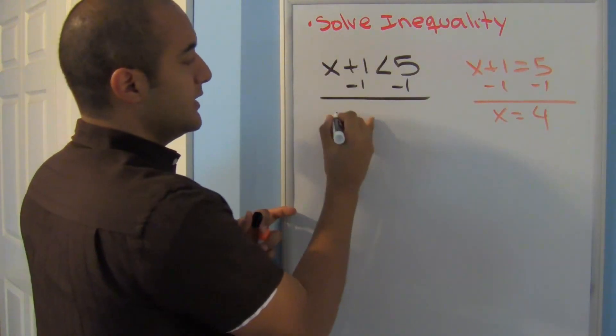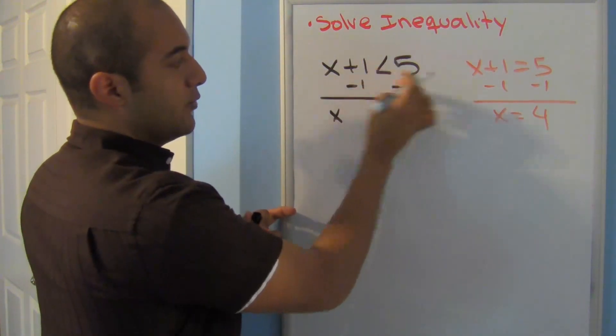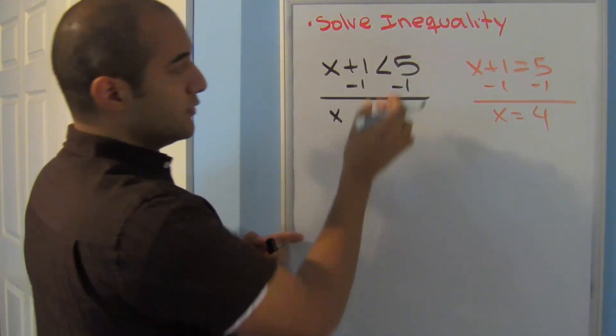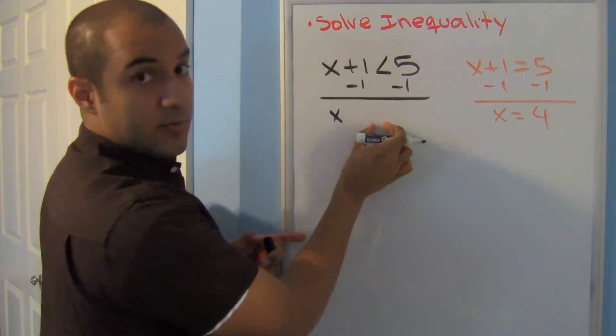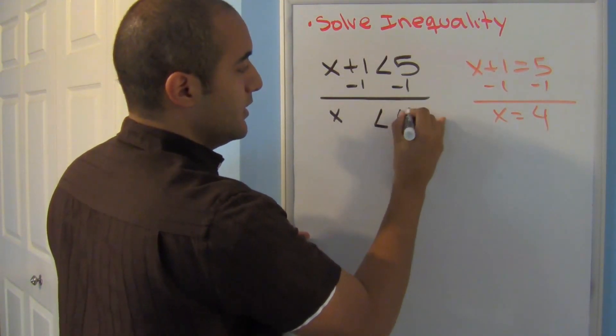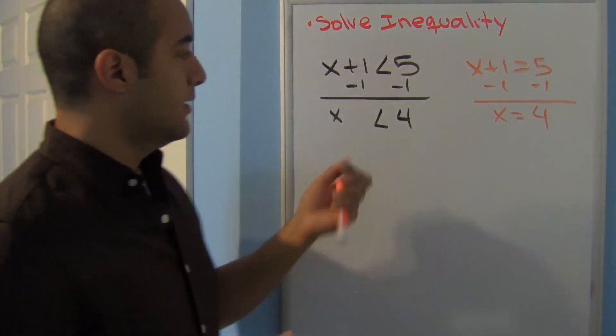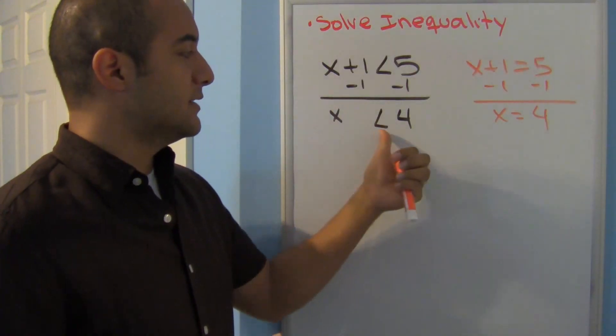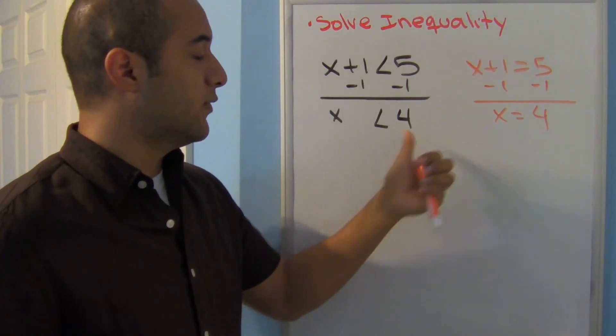I'll go ahead and bring down what I didn't touch. Notice that my 1 has been moved, my less than symbol stays a less than symbol, and this is a 4. My answer is x is less than 4.